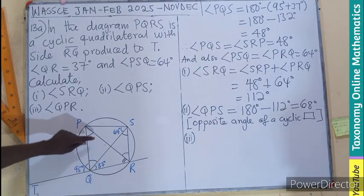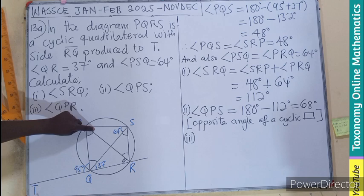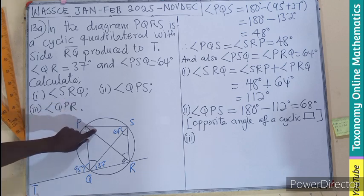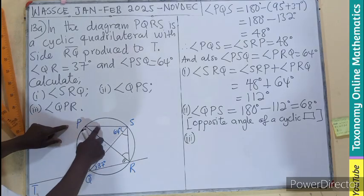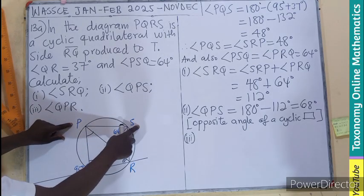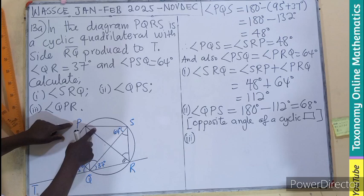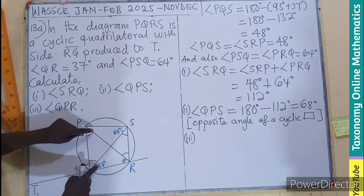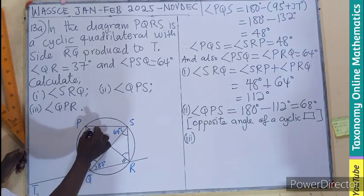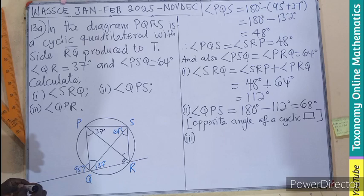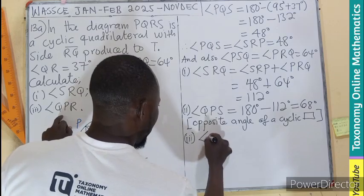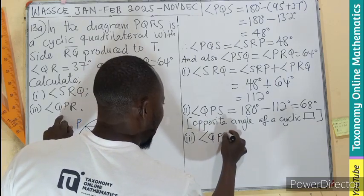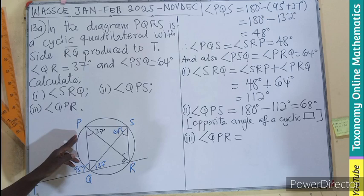This angle is the same as the angle here. If we subtract this angle from the total angle of 68° (which is QPS), we subtract 37° from that, we should have this angle.